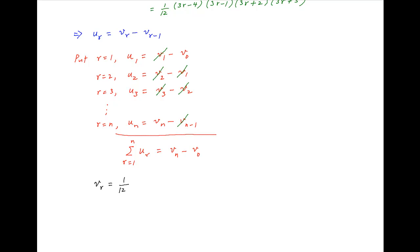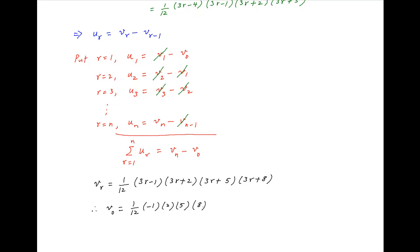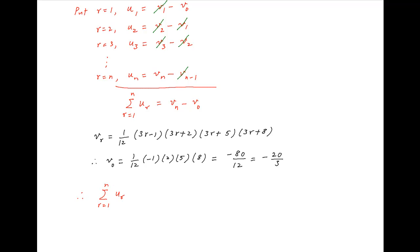Now, recall that vr equals 1 upon 12 times (3r minus 1)(3r plus 2)(3r plus 5)(3r plus 8). Put r equal to 0: v0 equals 1 upon 12 times (minus 1)(2)(5)(8), which equals minus 80 upon 12, simplifying to minus 20 upon 3. Therefore, the sum of the n terms of the given series is equal to vn, which is 1 upon 12 times (3n minus 1)(3n plus 2)(3n plus 5)(3n plus 8), minus v0, that is plus 20 upon 3. And this is the required answer.